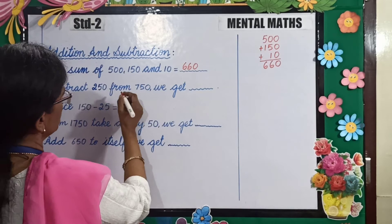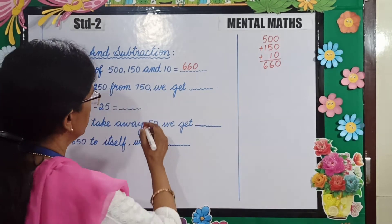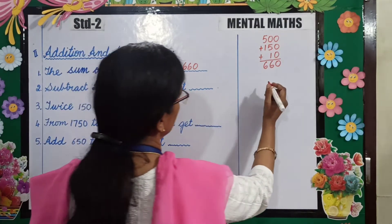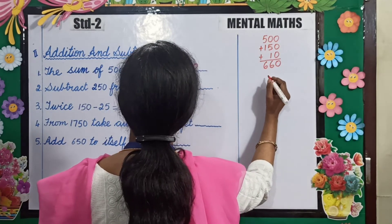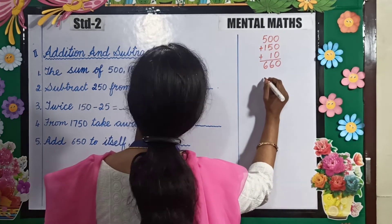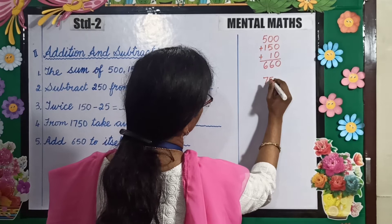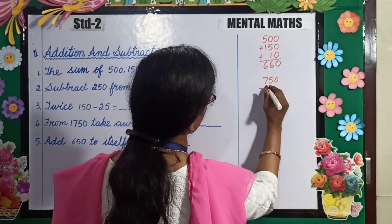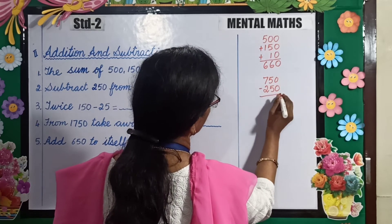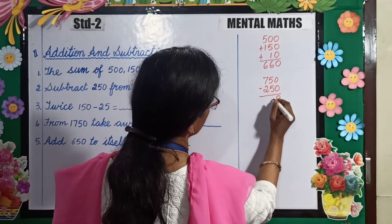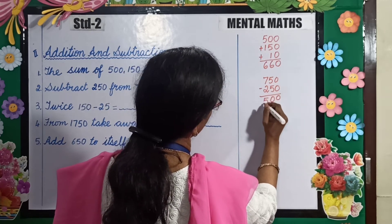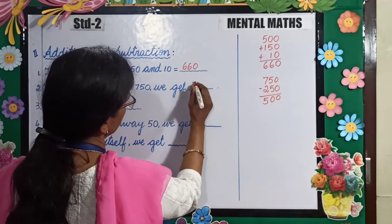Subtract 250 from 750 — we get? So from 750 you will subtract 250: 750 minus 250. 0 minus 0 is 0, 5 minus 5 is 0, 7 minus 2 is 5. So your answer is 500.